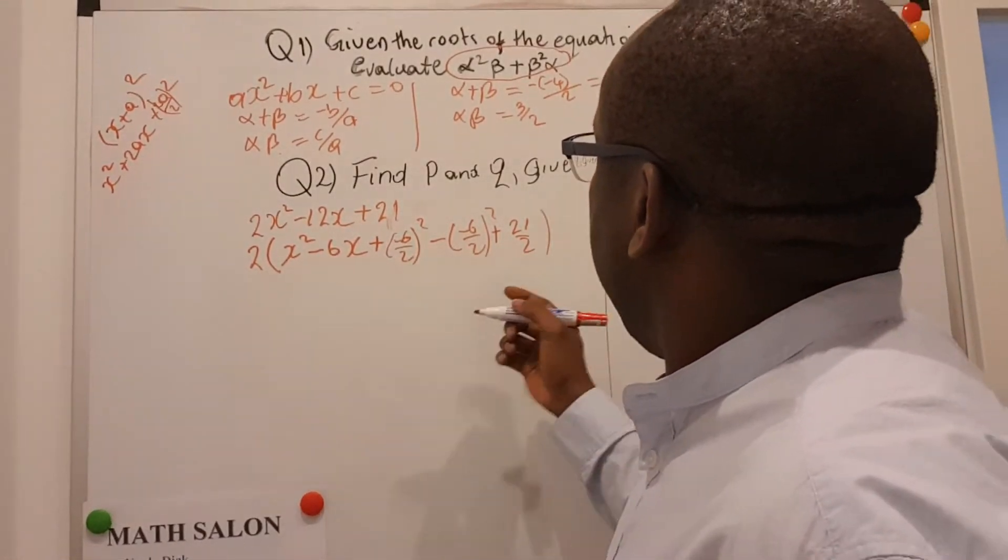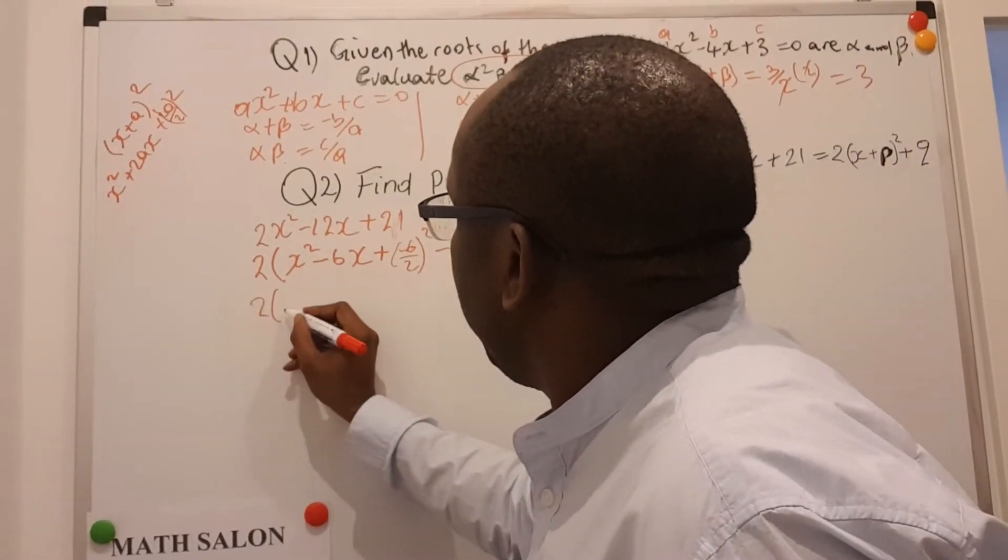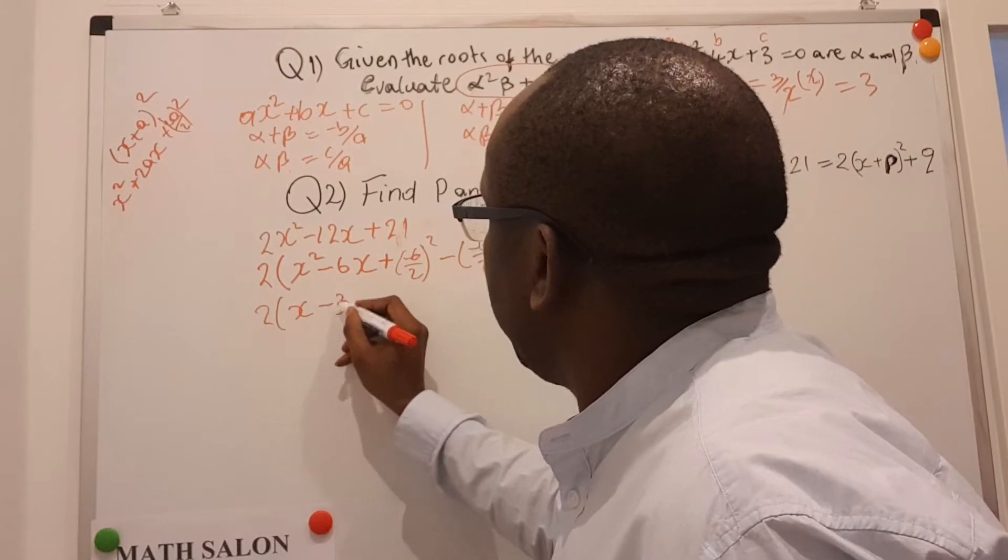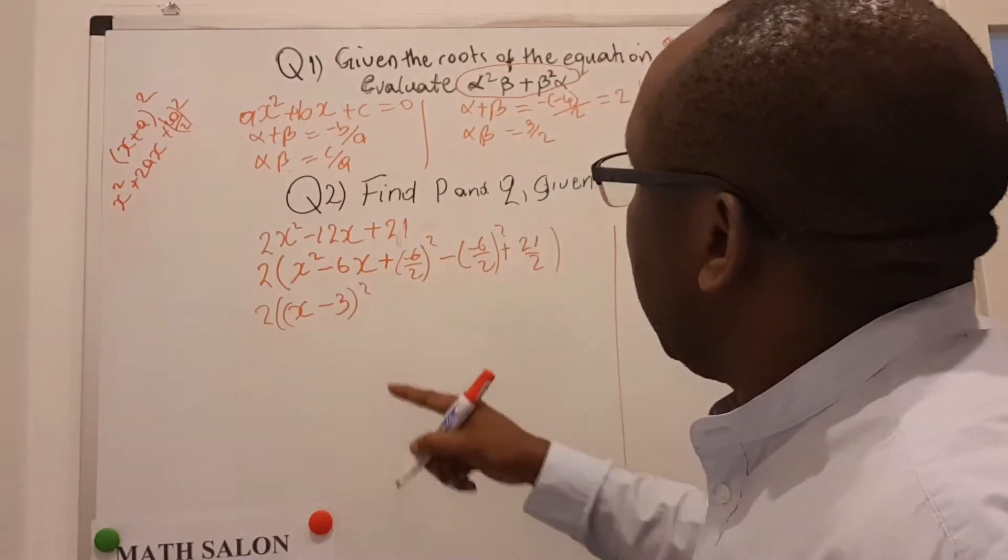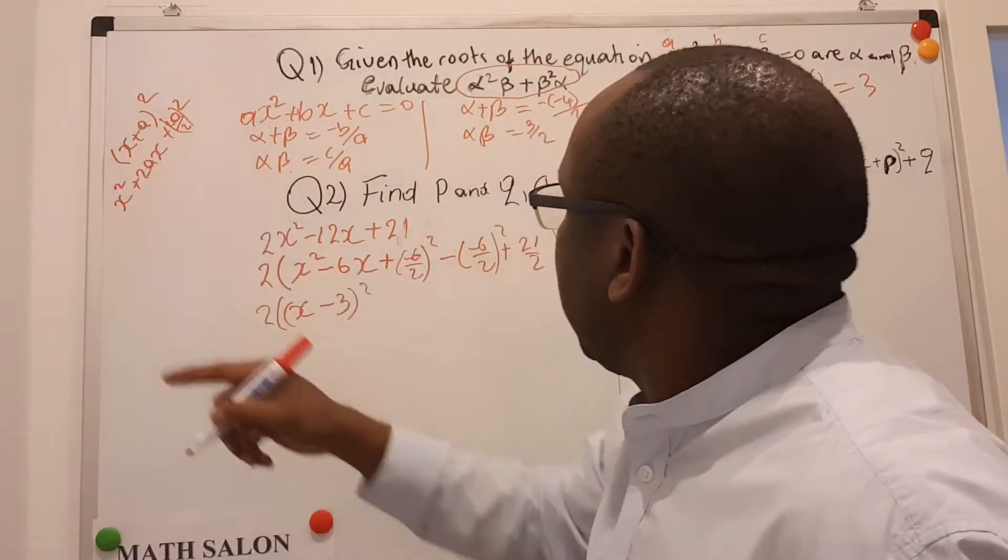Okay, so if we do that here, then I get 2 here into x minus 3, all that squared, because minus 6 on 2 is 3, and that will be the expression that we have, we'll come back that way.